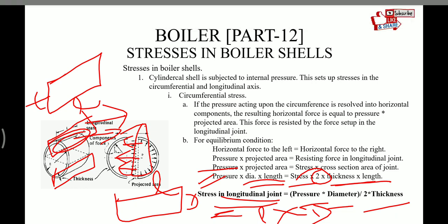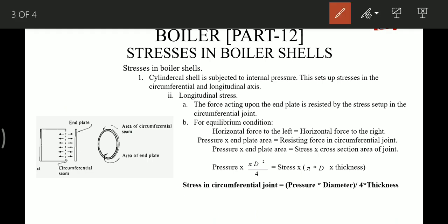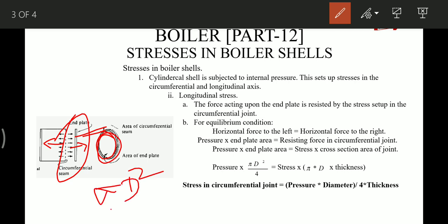Now let's look at the longitudinal stresses developed in the boiler. For longitudinal stresses, we assume that the end plate is welded. The longitudinal stress — the force acting upon the end plate — is resisted by the stress set up in the circumferential joint. For equilibrium, horizontal force to the left equals horizontal force to the right. The horizontal force to the left is pressure into end plate area, and the end plate area is πD²/4, so the force is pressure × πD²/4.